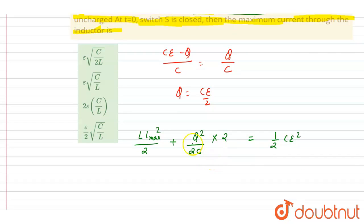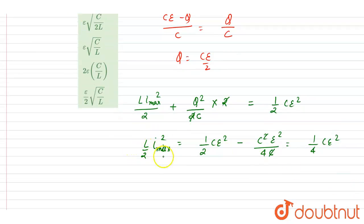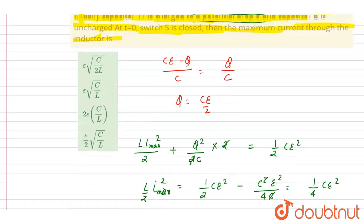Substituting q = Ce/2 into the energy equation: the capacitor terms give (Ce/2)²/2C × 2 = C²E²/4 × (1/C) = CE²/4. So ½CE² = CE²/4 + ½LImax², giving ½LImax² = CE²/4. Solving: Imax = E√(C/2L). The factor of 2 and 4 simplify, yielding Imax = E√(C/2L). You can now check the correct option.